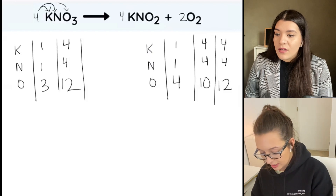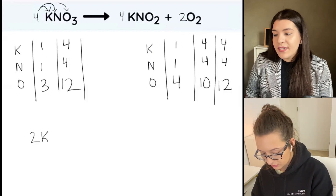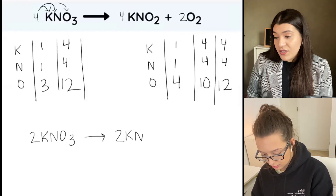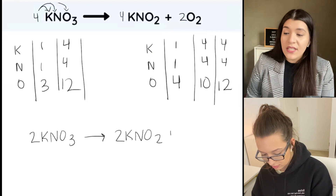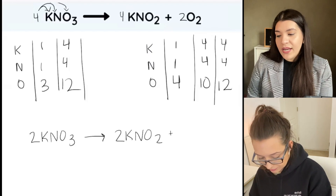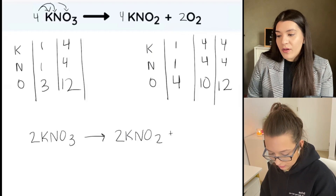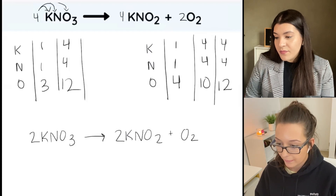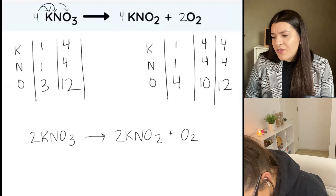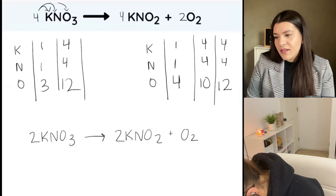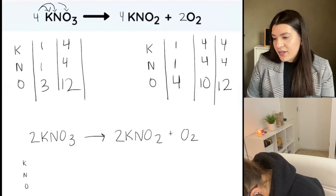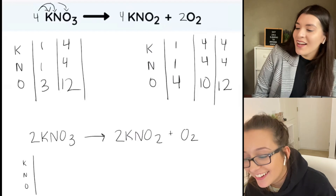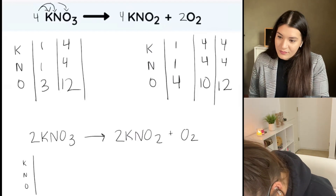So we would just rewrite it with a two — it's essentially dividing all the coefficients by two. And just to prove a point, why don't we recount from this new equation and make sure everything is balanced. Okay, do the same exact thing — just to make sure. Yes, even just copy and paste it if you want. You're good. Okay, go for it.